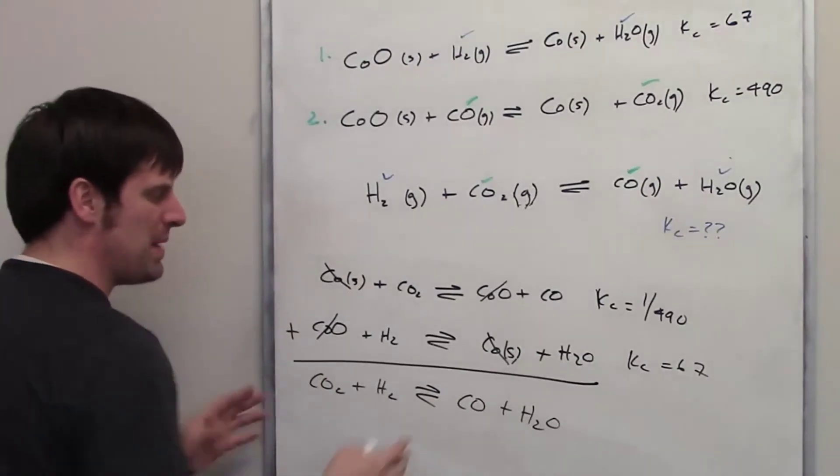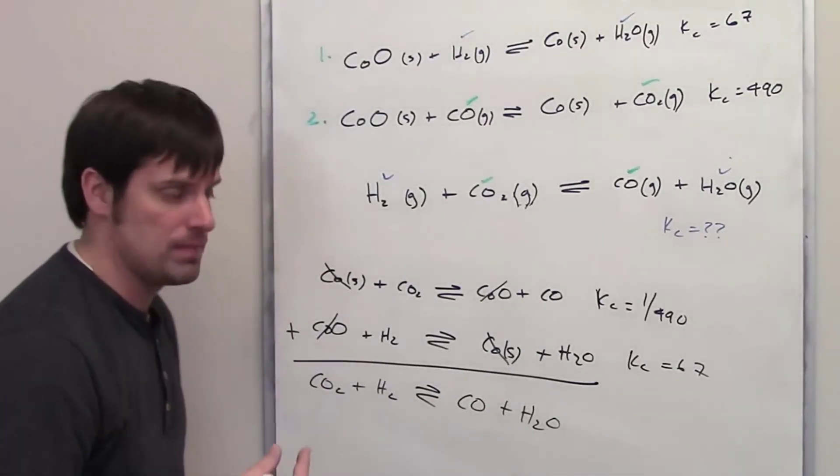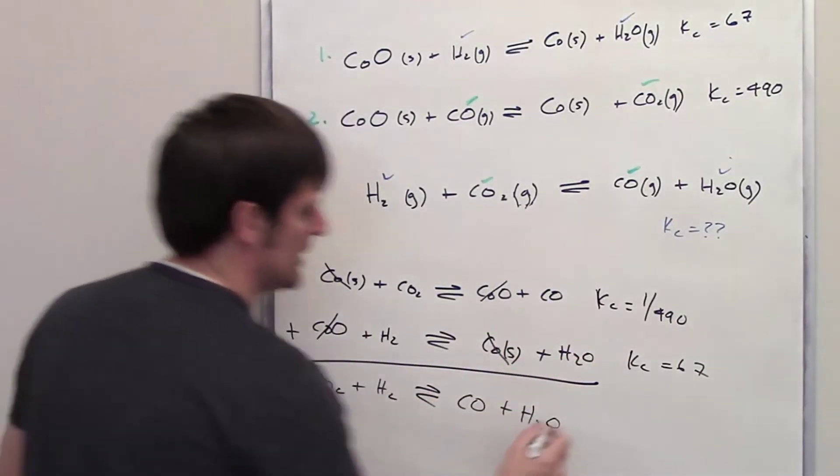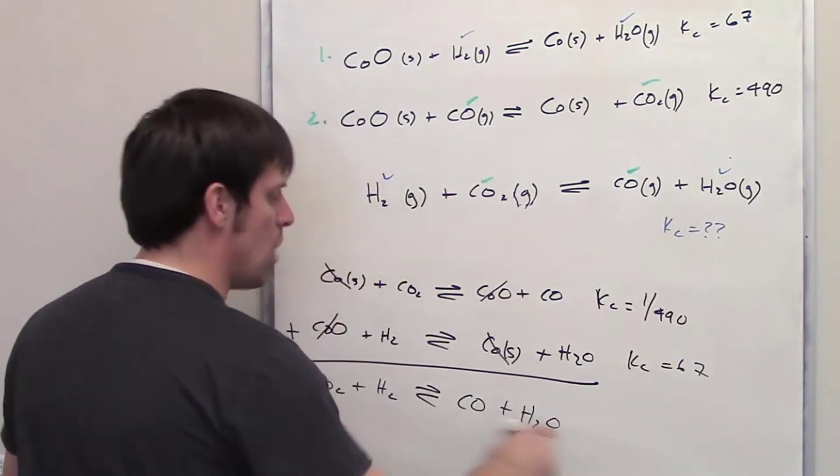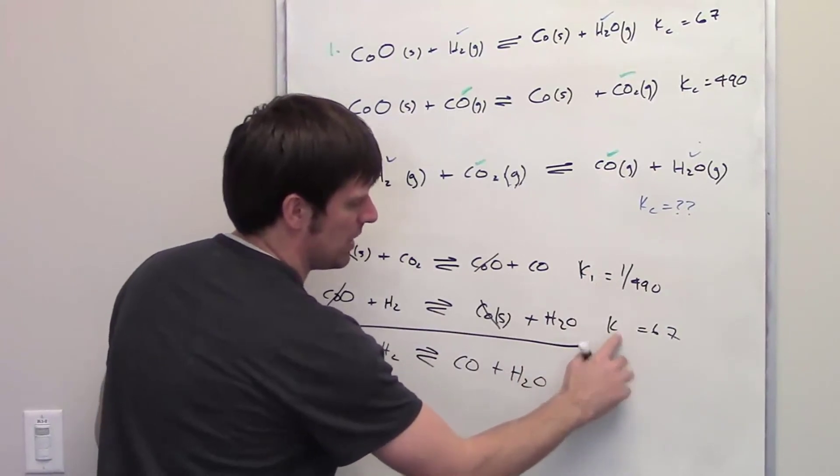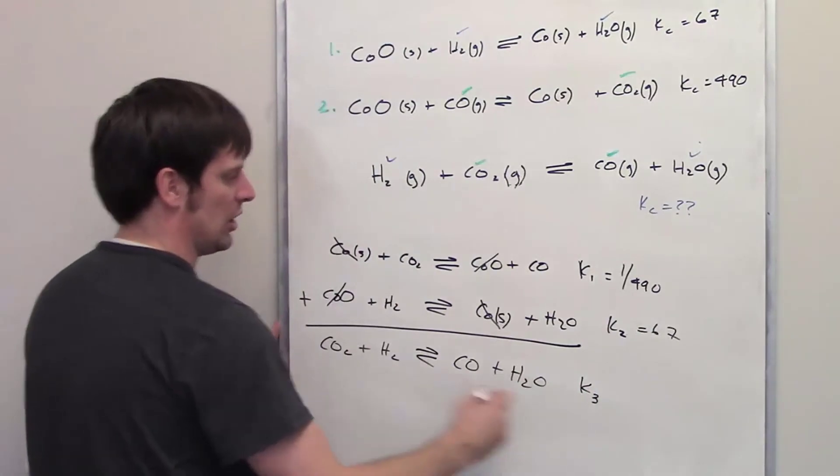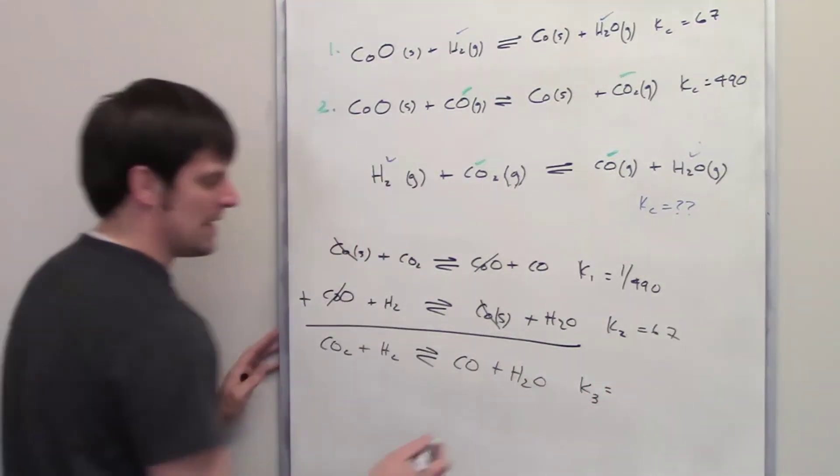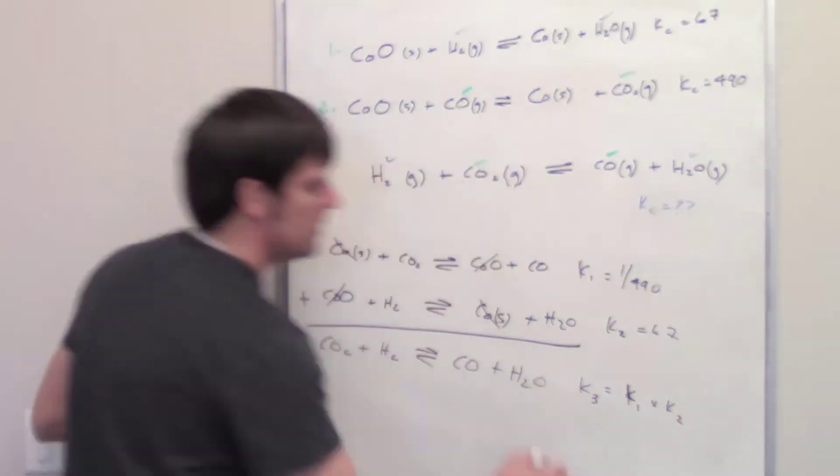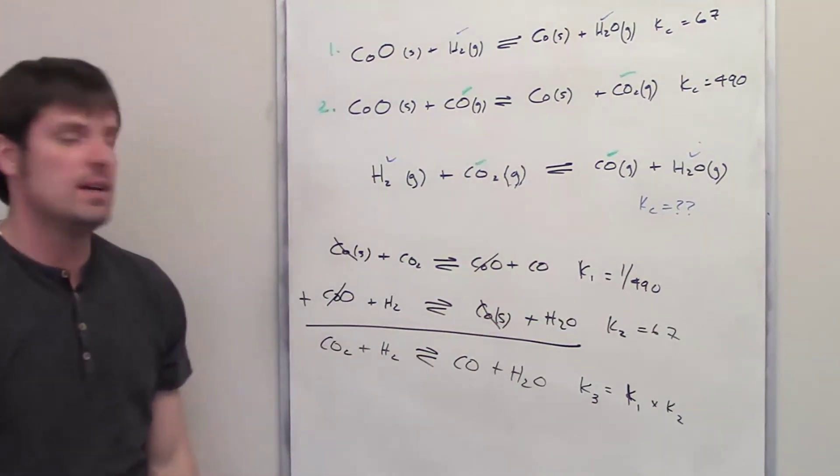So what's the overall Kc going to be for this? When you take two equations and you add them together, you have to multiply their individual Kc's in order to get a new Kc for the new overall equation. So this first Kc value I'm going to call K1. The second one I'm going to call K2. And whatever the K value is for this, I'm going to call K3. K3 then is going to be equal to K1 multiplied by K2. I'll let you throw those into your calculator to get an actual answer to that on your own.